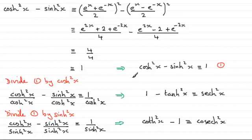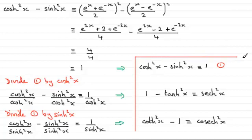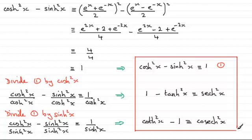I will go through a quick method that we can use — it's called Osborne's rule — in my next video. Once you learn Osborne's rule, it's a very simple rule, and you can see that we can derive many more identities from the trigonometric identities that we know without resorting to this exponential method.